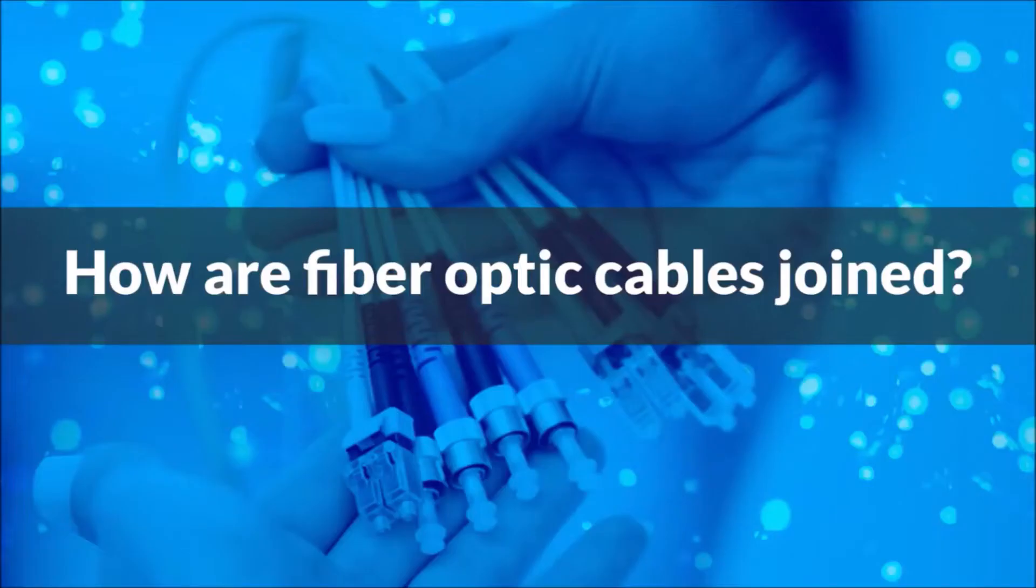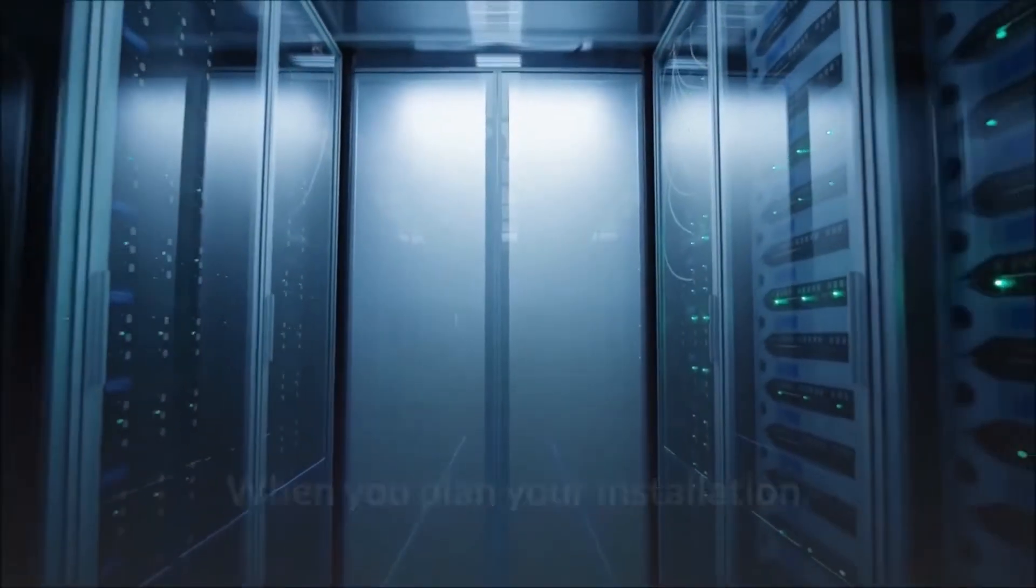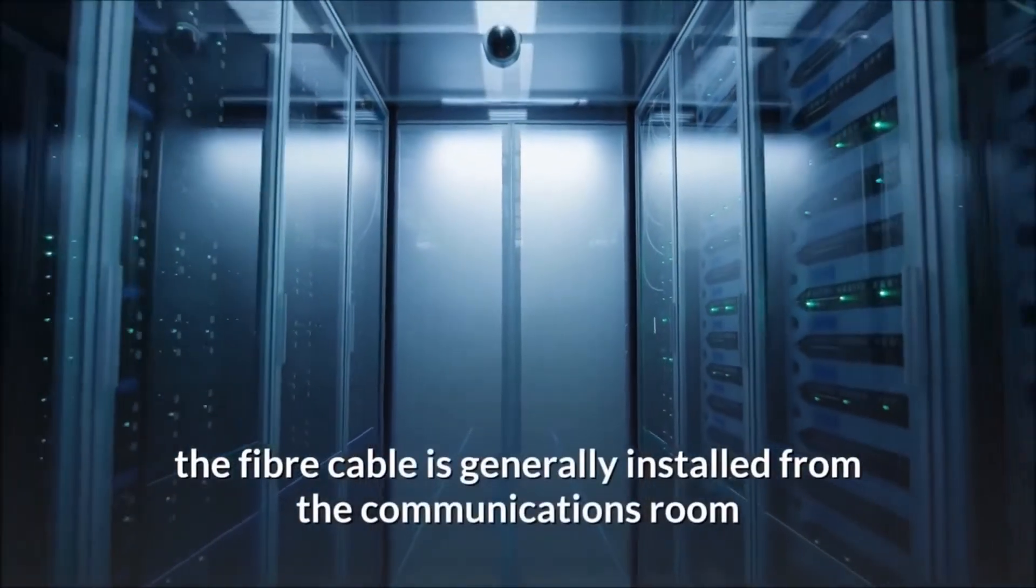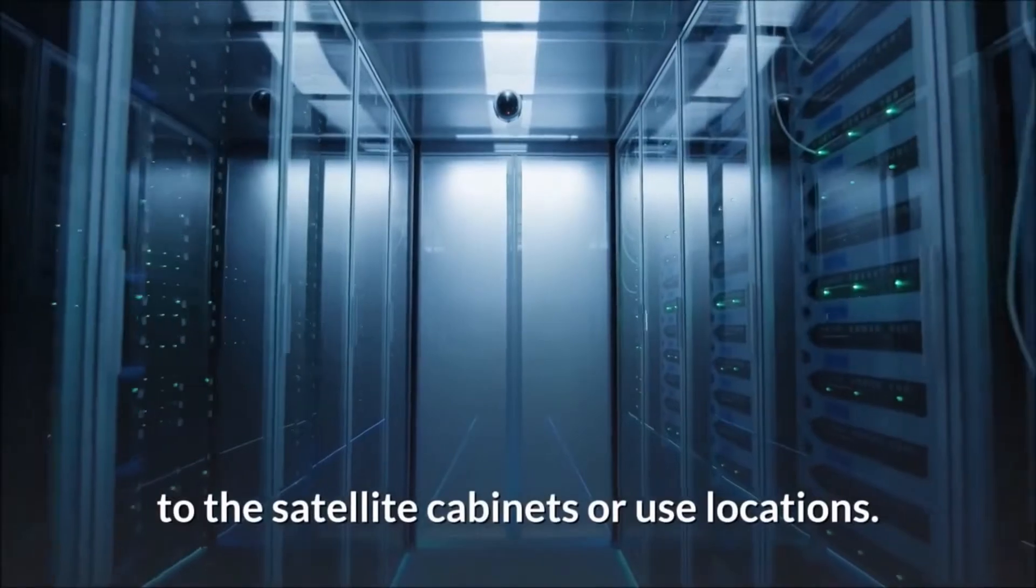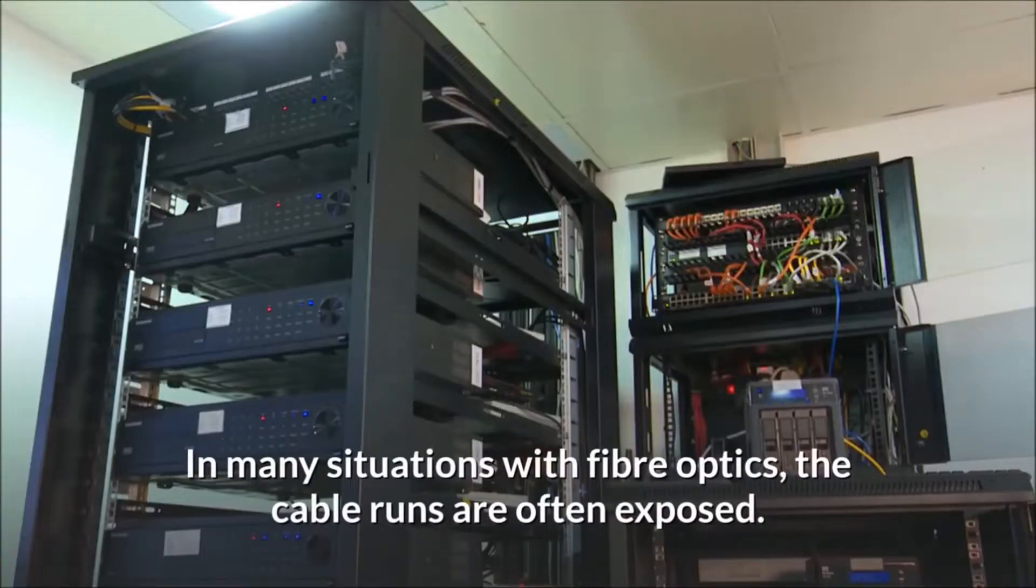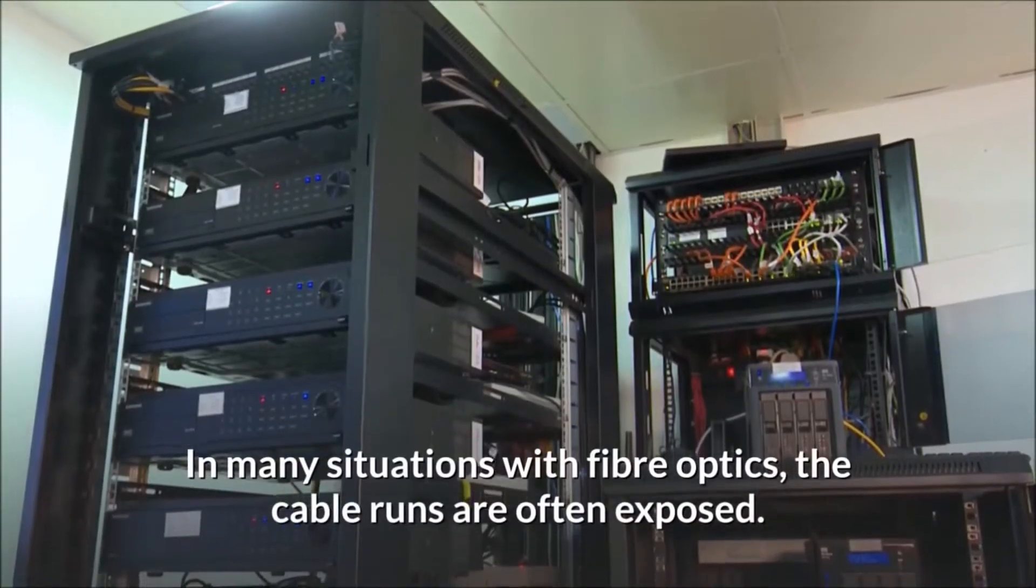How are fiber optic cables joined? When you plan your installation, the fiber cable is generally installed from the communications room to the satellite cabinets or use locations. In many situations with fiber optics, the cable runs are often exposed.